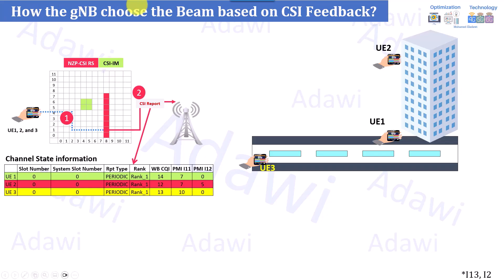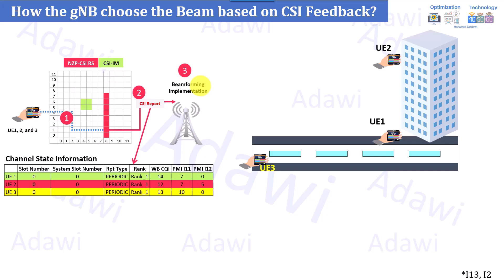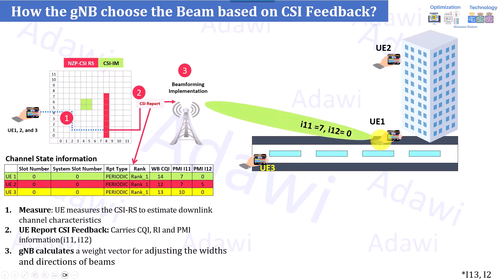Assuming user one reports a CQI of 14, the PMI i11 represents the horizontal direction — it's telling the gNB it needs beam number seven. The PMI i12 represents the vertical direction — this user is on the ground, so i12 equals zero. Once the gNB receives the CSI report, it calculates the co-phasing and beam direction. As you can see here, it allocates the traffic beam with i11=7 and i12=0. For user two, it's i11=7 and i12=5.